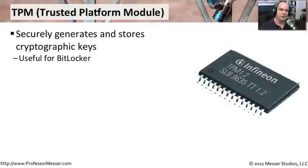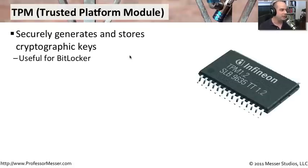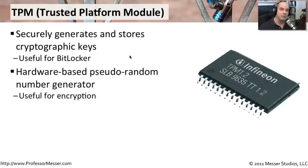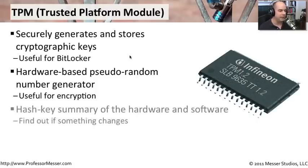If you've ever installed a full disk encryption program or had it integrated into your operating system, you may have encountered the requirement for a Trusted Platform Module, or TPM. The TPM is a chip usually found on a motherboard that handles many cryptographic functions for us. It securely generates and stores keys — for example, if you have BitLocker, you keep keys associated with that particular machine stored on it. It also has advanced pseudorandom number generators to help build new keys, since so many mathematical functions are involved in that process.